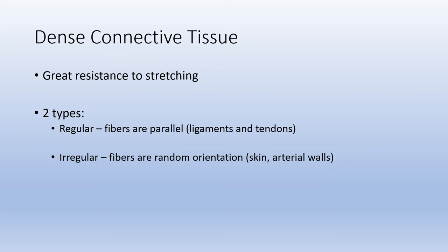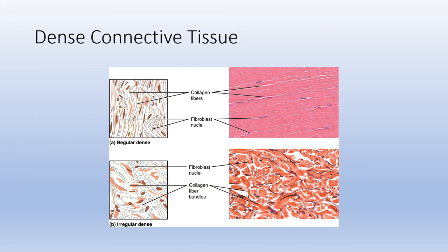Dense connective tissue has a lot of resistance to stretching, with a much thicker matrix than loose connective tissue. There are two main types: regular and irregular. For regular dense connective tissue, the fibers run parallel — examples include ligaments and tendons. For irregular dense connective tissue, the fibers are randomly arranged — an example is the skin. In microscope slides, the parallel arrangement is clear in regular dense, while irregular shows no pattern.